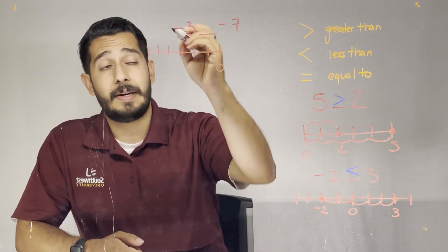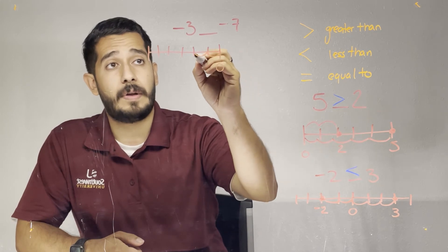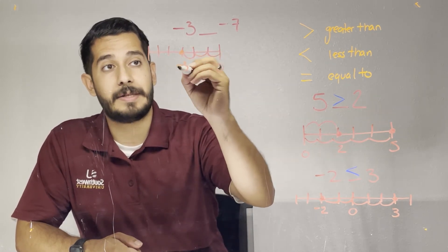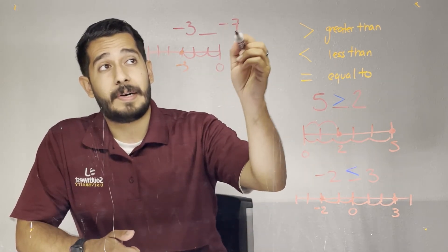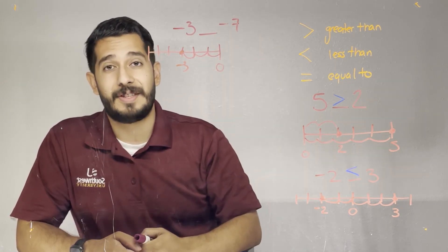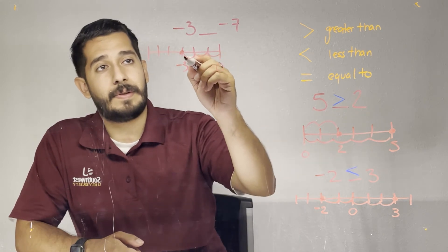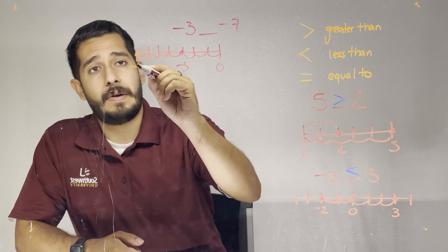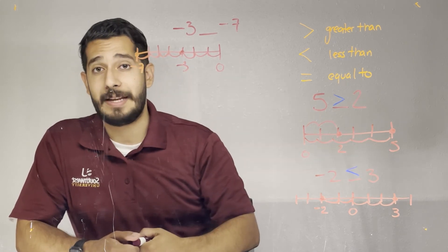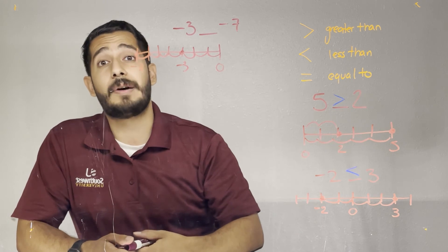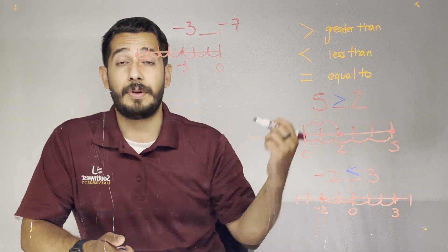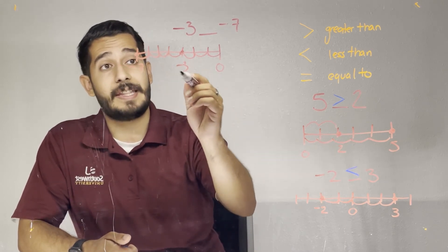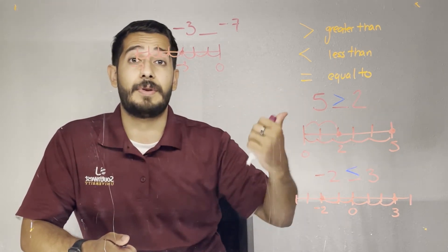The first number is negative three, so I have to walk three units to the left — this is where negative three lies. For my second number, I'm going to walk seven units to the left — this is where negative seven lies. Now I have to find which of those two numbers goes farther to the right, and that's going to be the greatest number. In this case, you can see that negative three is farthest to the right.